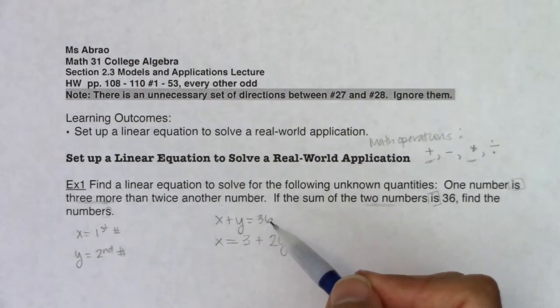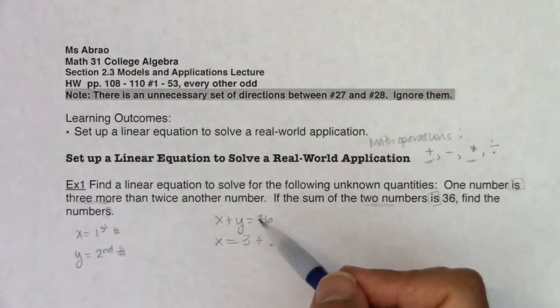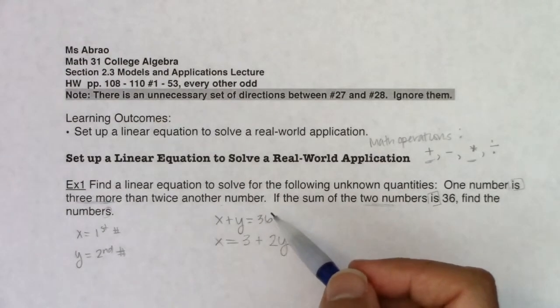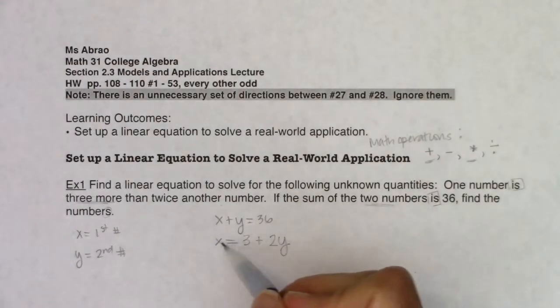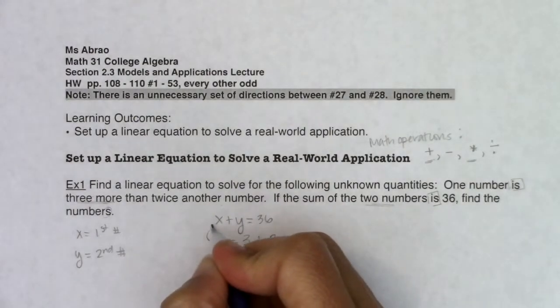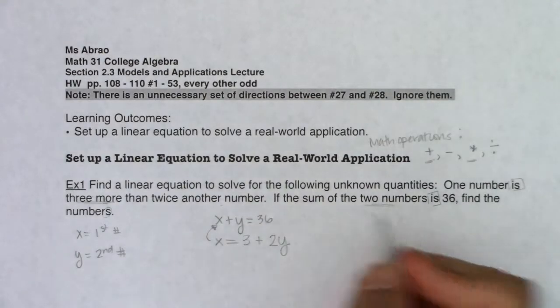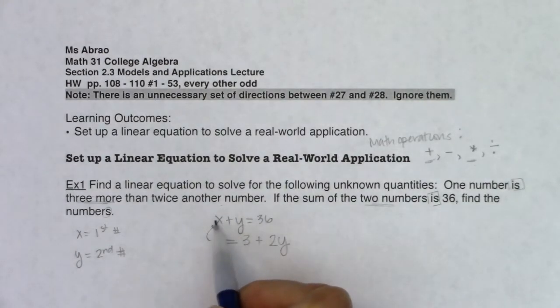You have a couple of options here: you could use substitution, elimination, you could graph these, you could use matrices. It depends on your math background in terms of what technique you would use. But for me, just taking a look at it, I'm going to use substitution. I know here x is equal to 3 plus 2y, so I'm going to substitute that into this equation. So instead of writing x here, I'm going to write what it's equal to: 3 plus 2y.